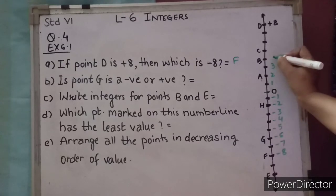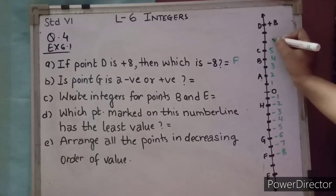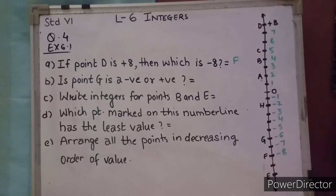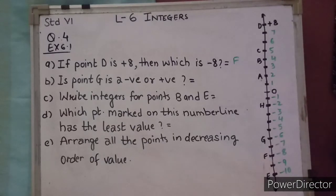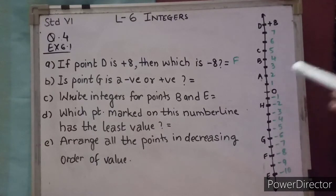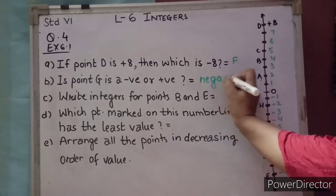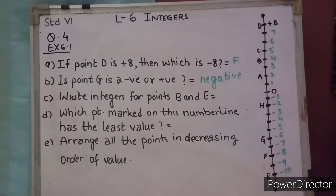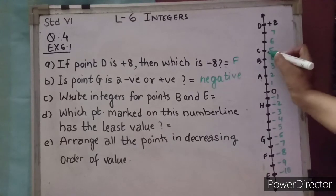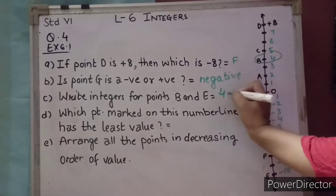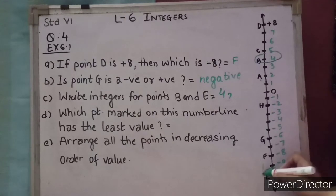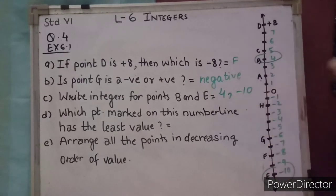Is point G negative or positive? Here it is — it is a negative number. The integer for point B is 4, and the integer for point E is minus 10.